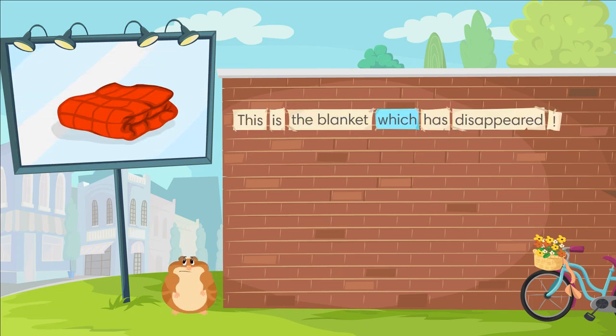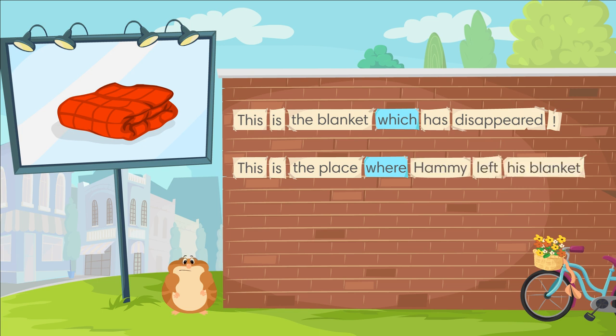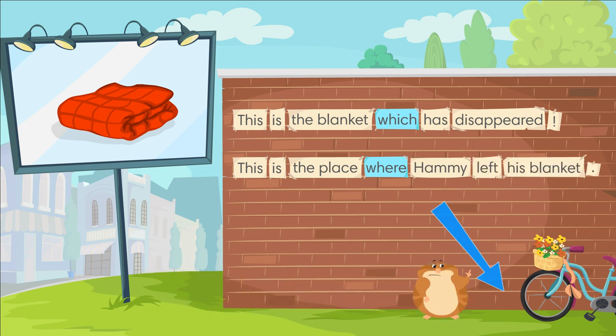This is the blanket which has disappeared. This is the place where Hammy left his blanket.